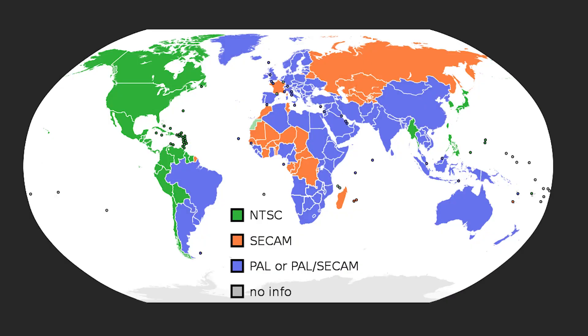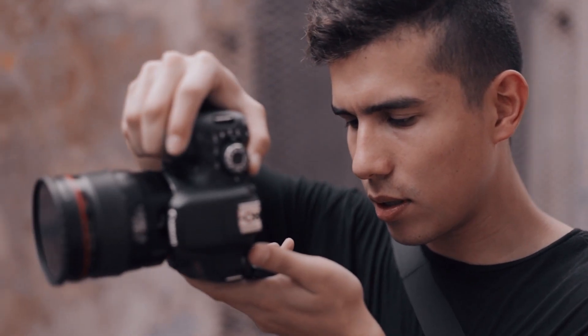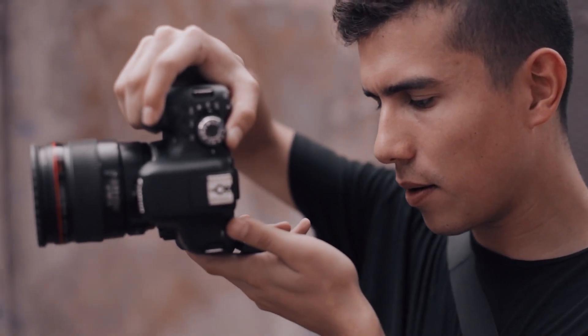30 fps is the standard frame rate for the NTSC format. Similar to PAL, it is the color encoding system for TVs in some countries, mostly in the Americas and some Asian countries like Japan. This is also a common frame rate on many cameras and smartphones, so it's common to see in online content such as YouTube videos.